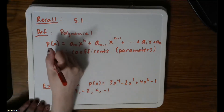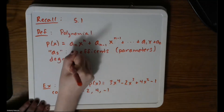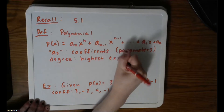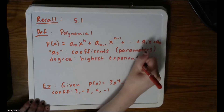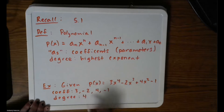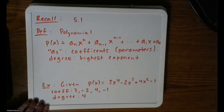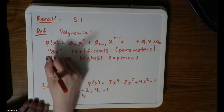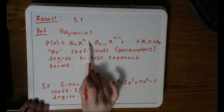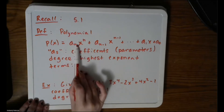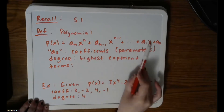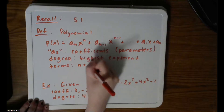Then we talked about the degree — the degree is the highest exponent. So in our example, our degree would be 4, whatever the highest power is. We talked about terms: anything separated by a plus sign or a minus sign is its own term. In our general equation I have from 1 up to n terms, and then I add 1 — so in general I have n plus 1 terms.